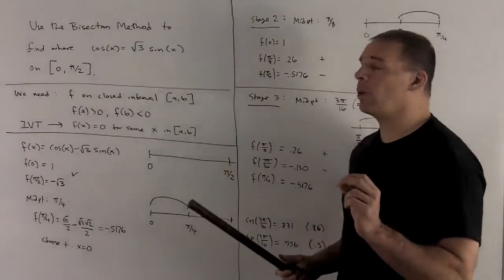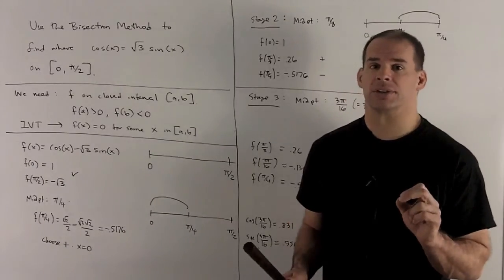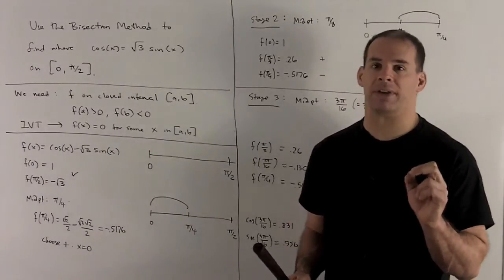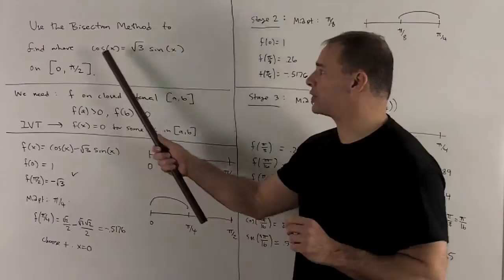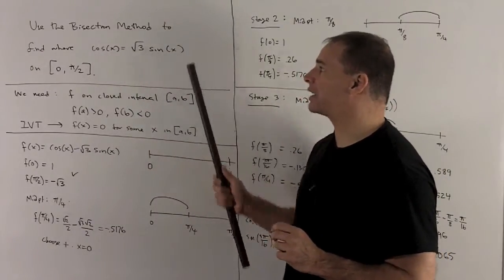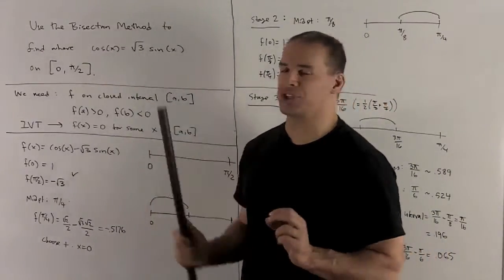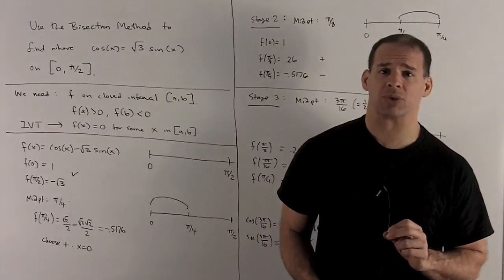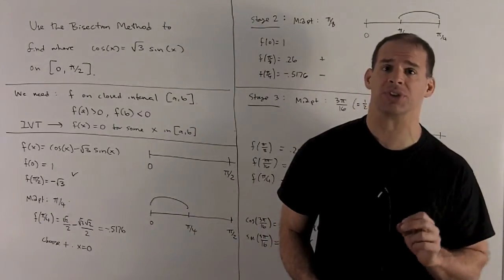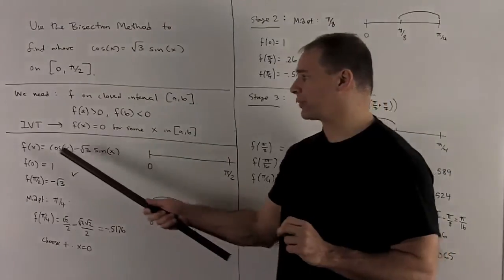So what I need here is, we're not given the function, we just need to figure it out. If I want cosine of x equal to radical 3 sine x, note if I push this to the other side, we're really looking for where cosine x minus radical 3 sine x is equal to zero. So that's what I'm going to choose for f.